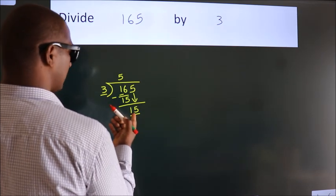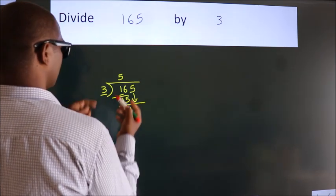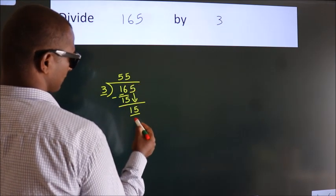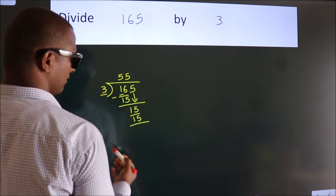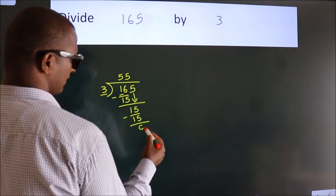When do we get 15? In the 3 table. 3 fives, 15. Now we subtract. We get 0.